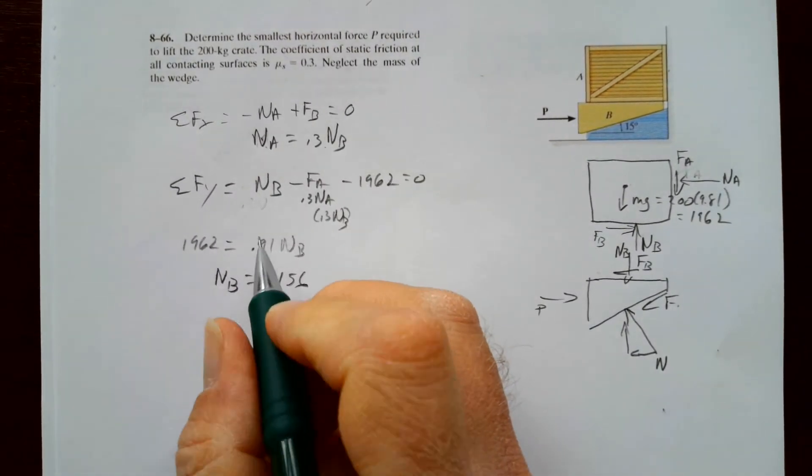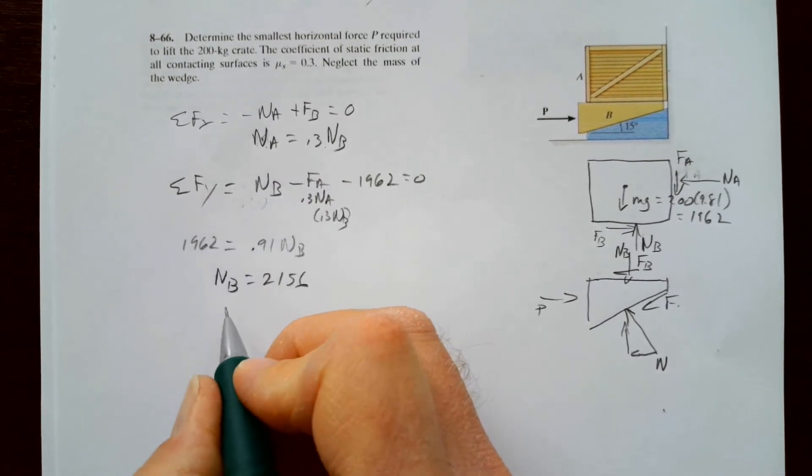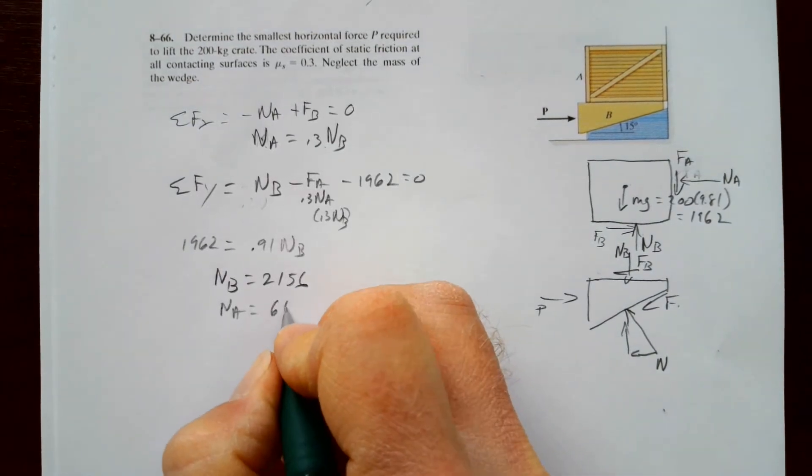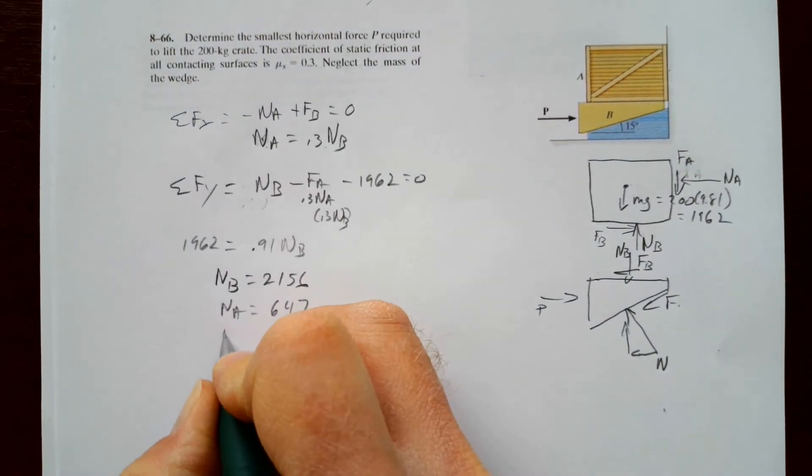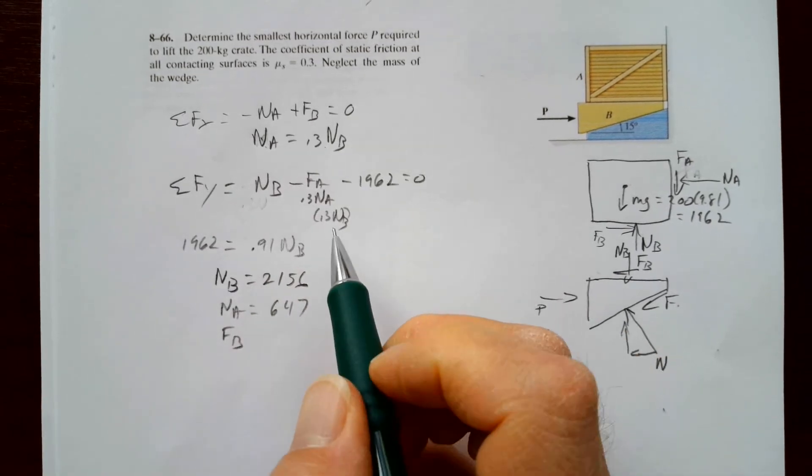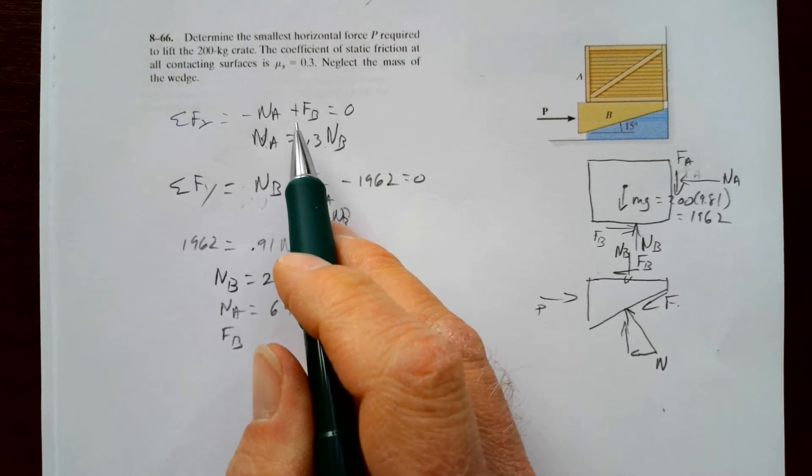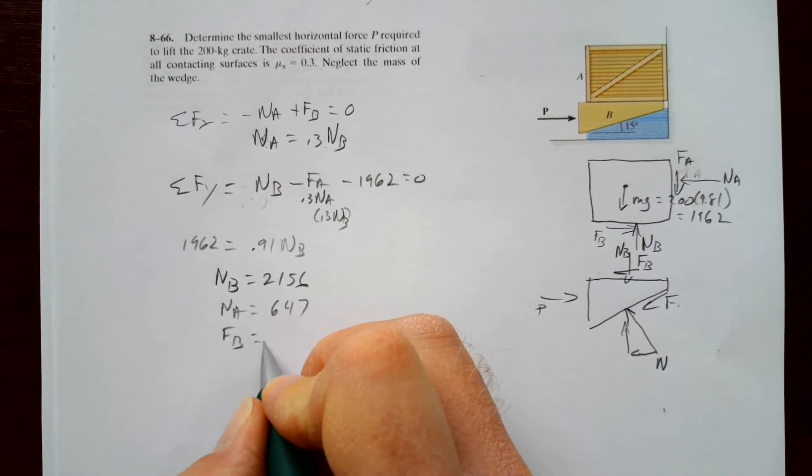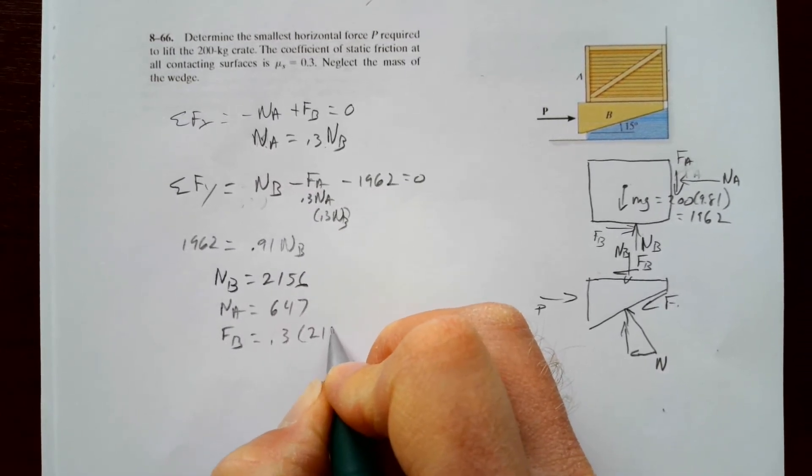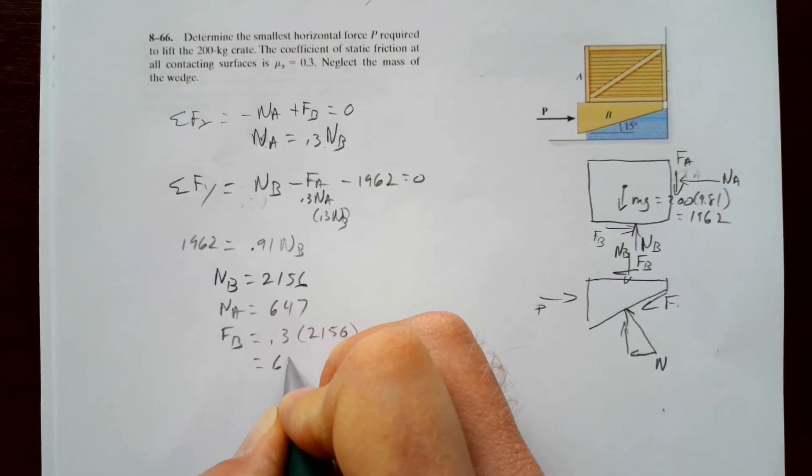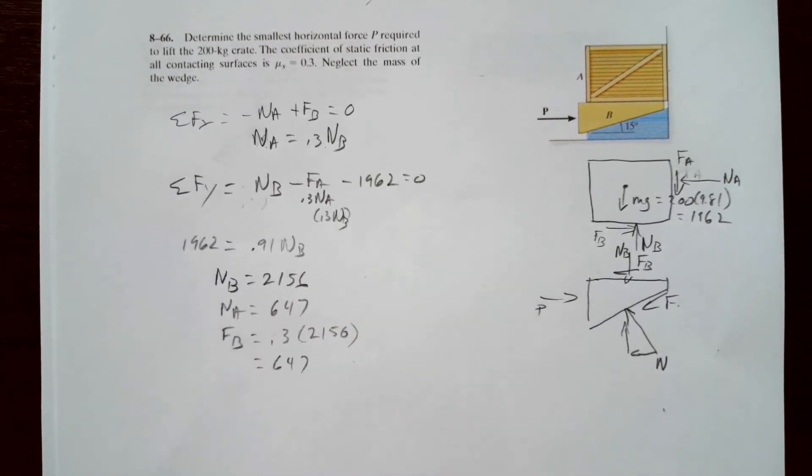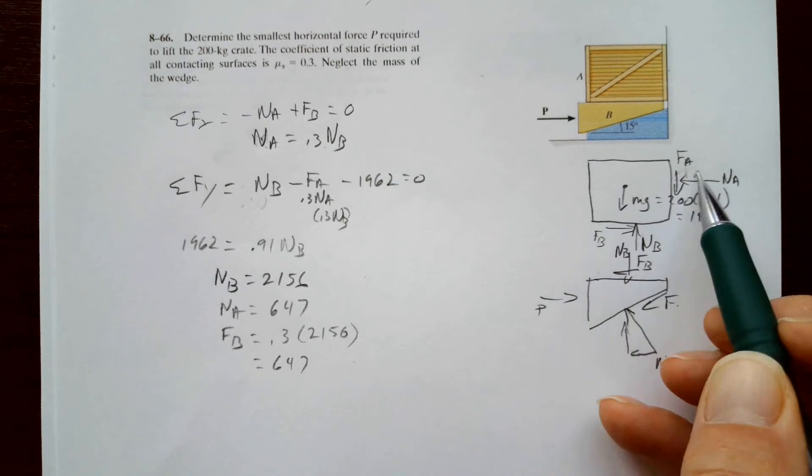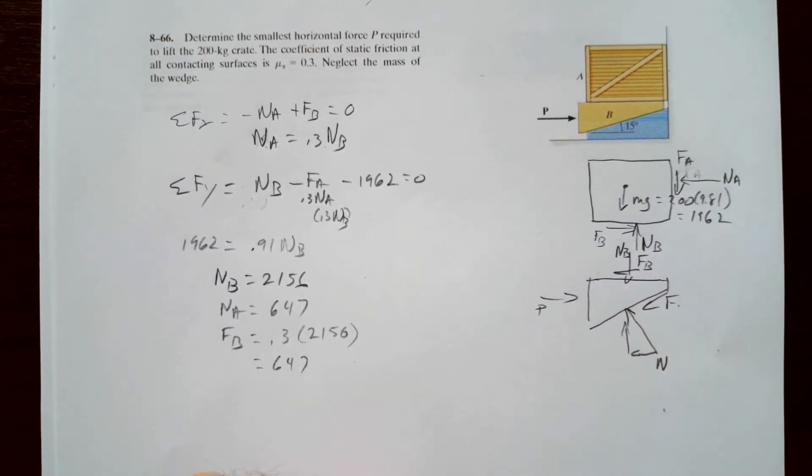And so NA is 0.3NB. So 0.3 of NB is 647. And FB then will be 0.3 times 2156, which also equals 647. That's because FB was equal to NA. And if we look at it, NA is pushing this way, FB is pushing this way. It has to be equal and opposite. So that was a little redundant work there.